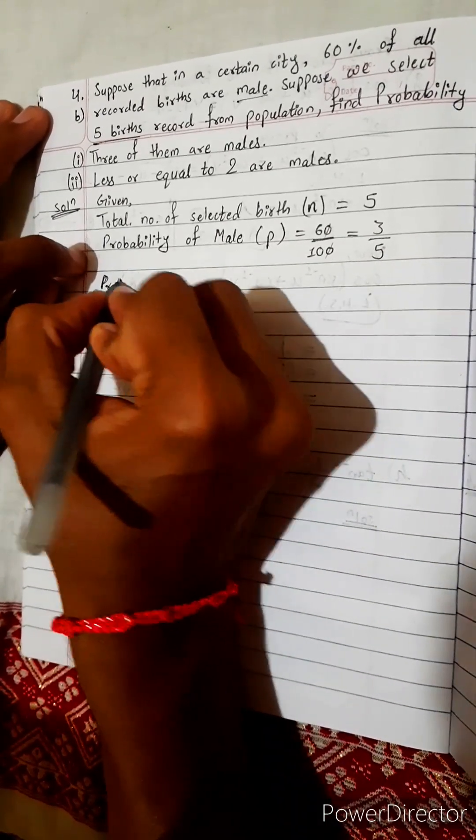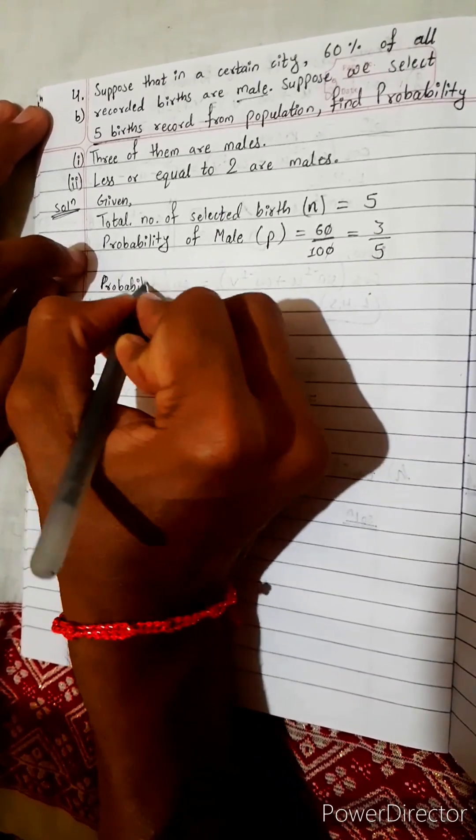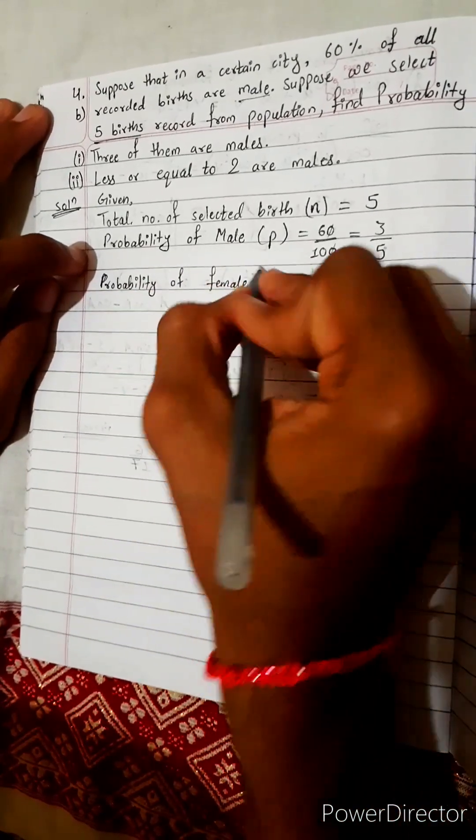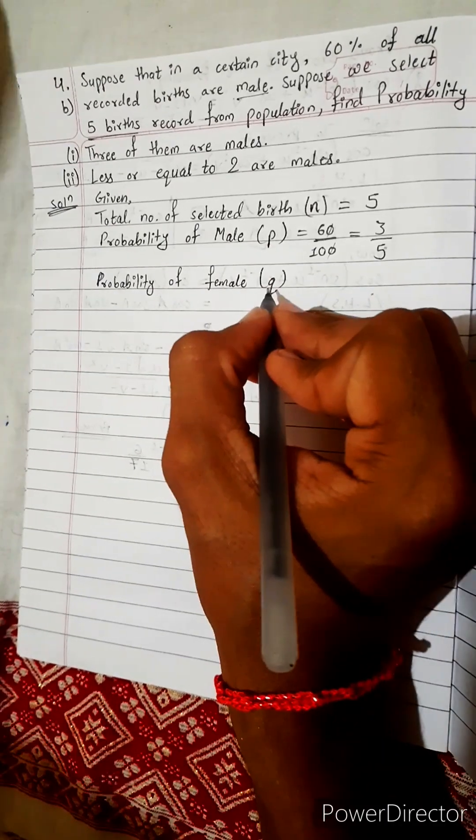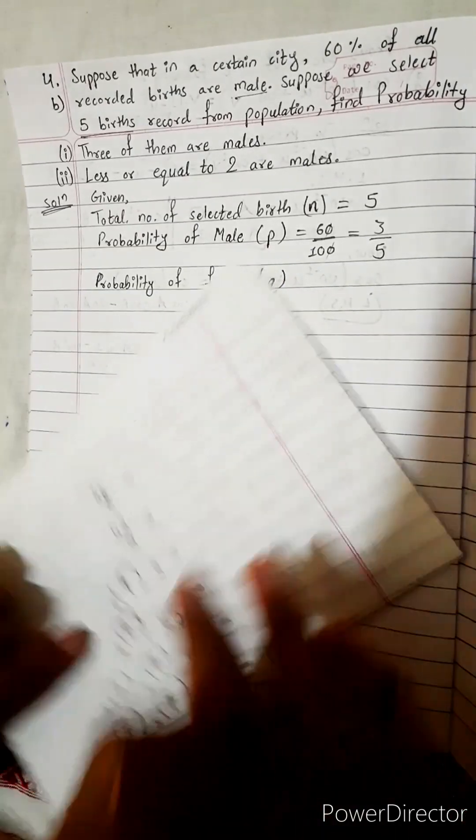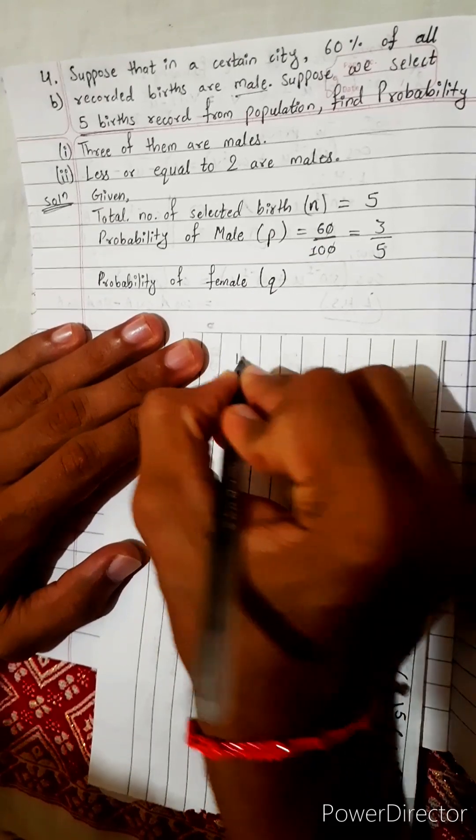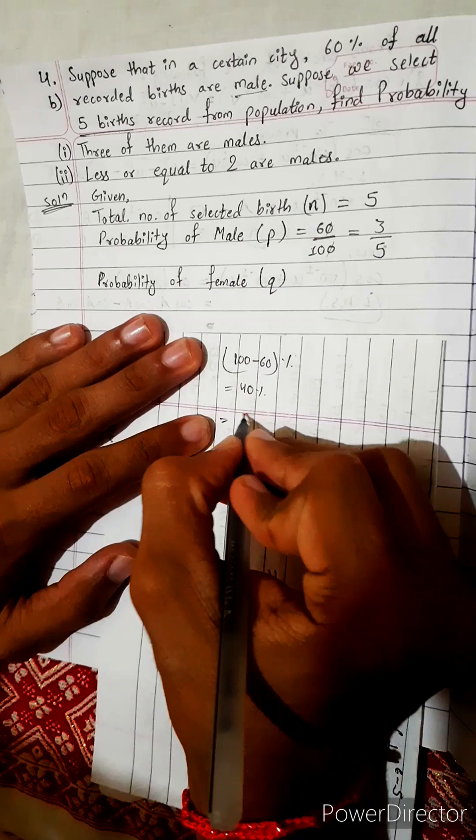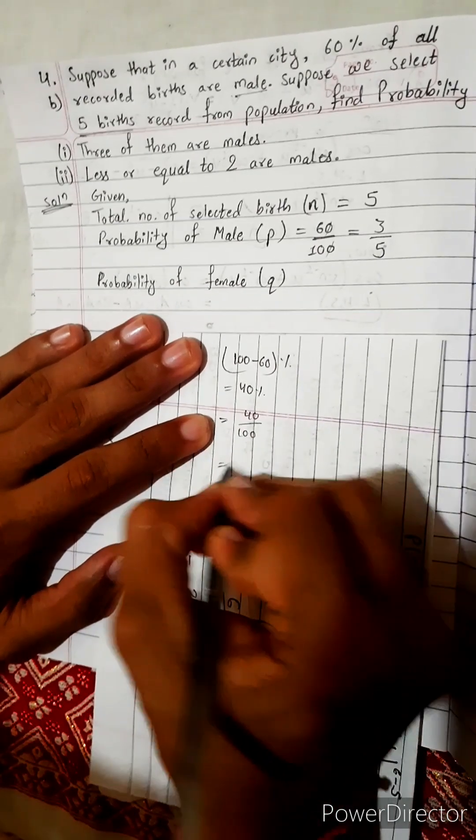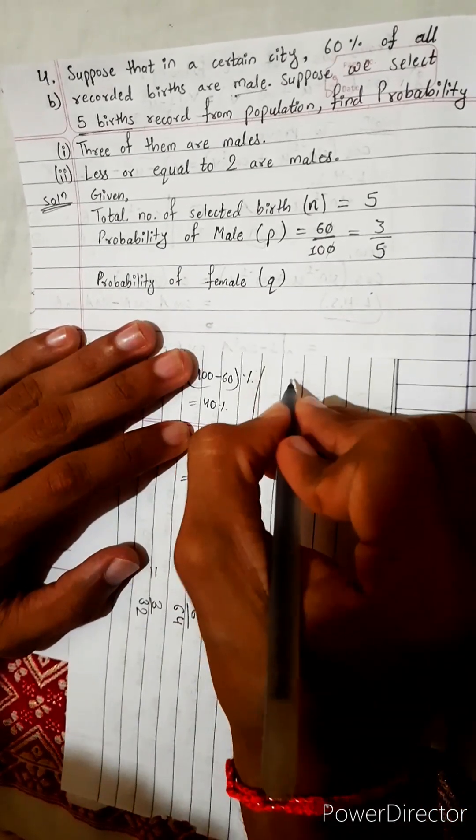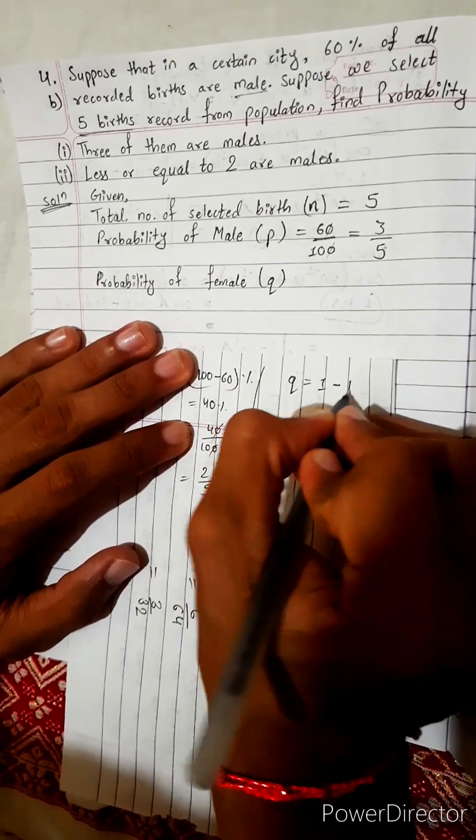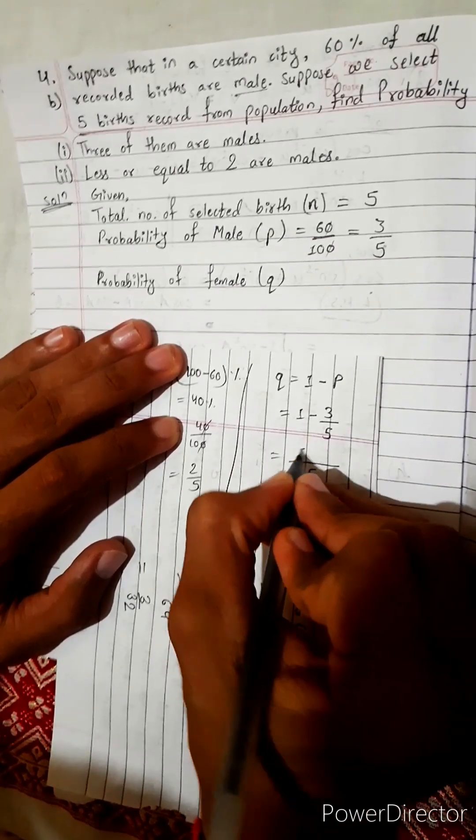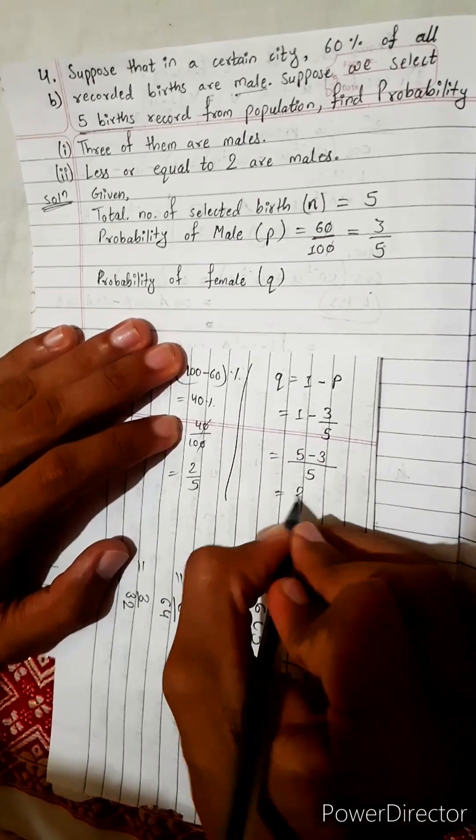Probability of female. Now male and female remaining, don't think about third gender. Let's do like this: 100 minus 60 percent, this is 40 percent. Again do like this, 40 by 100, this is two by five. Or you can do like this: q equals 1 minus p. One minus three by five, take LCM, five minus three is two by five. Same thing, so directly write two by five.